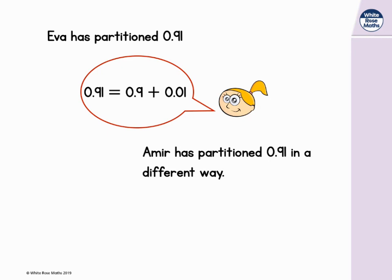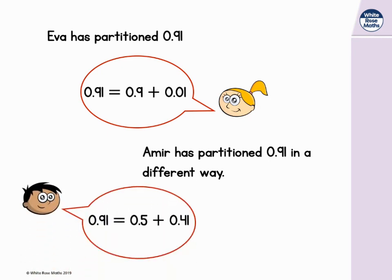Consider Amir's method. Amir has partitioned the number, saying zero point nine one is equal to zero point five and zero point four one. There are lots of different ways that we could partition zero point nine one, and you're going to look at how you can partition numbers in the next few questions.